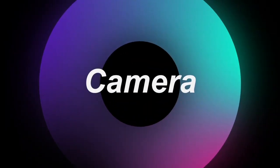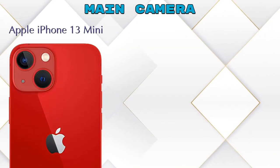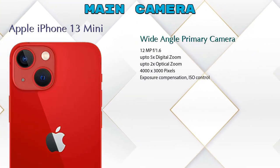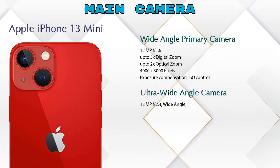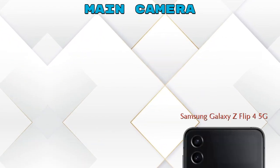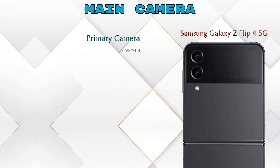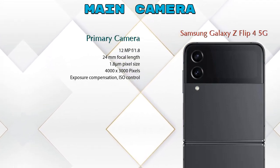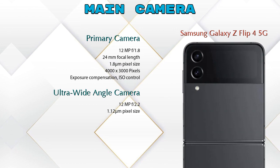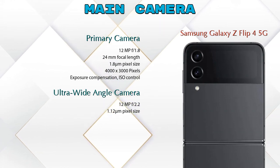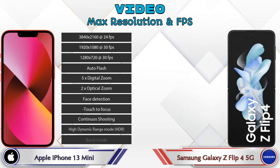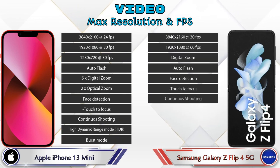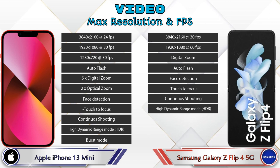Let's see the detail about our favorite feature: cameras. For the rear camera, the iPhone 13 Mini has two cameras — a wide-angle primary camera and an ultra-wide-angle camera. The Z Flip 4 5G also has two cameras: a primary camera and an ultra-wide-angle camera. For video camera features, the iPhone 13 Mini has 11 and the Z Flip 4 5G has 8 different types of features available.